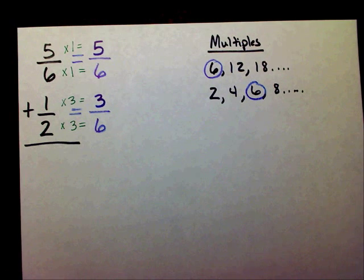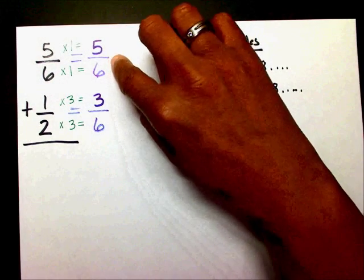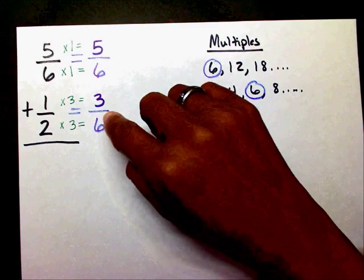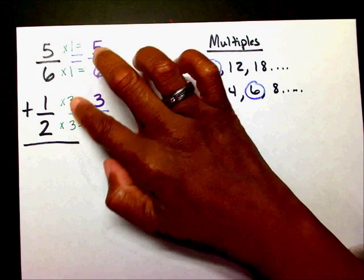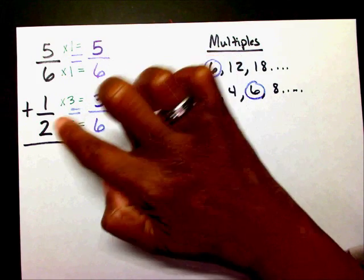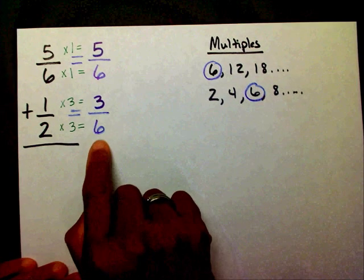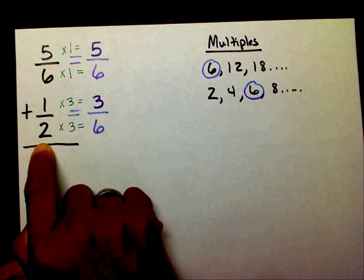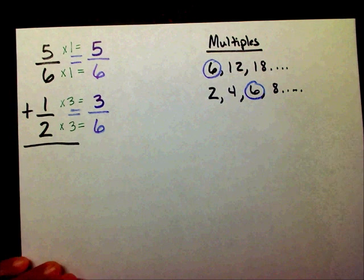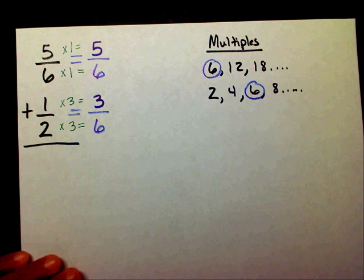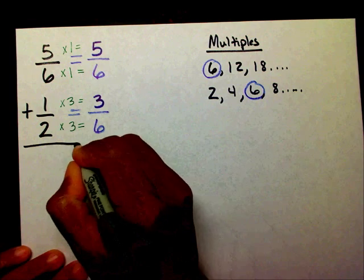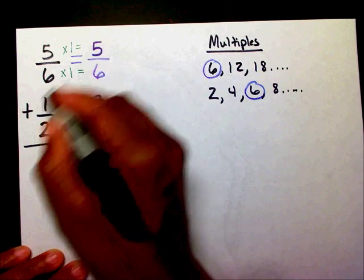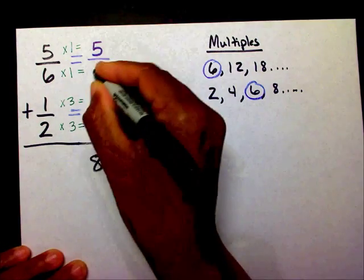When I multiply by 1, I ended up with the same fraction, which is okay because my denominator was already 6. But when I multiply my numerator and denominator by 3, I ended up with an equivalent fraction of 1/2 — if I were to reduce 3/6, it would reduce down to 1/2. Now that I have the same denominator, I'm going to add my numerators: 5 plus 3, which is 8. And I'm going to keep my new denominator, 6.